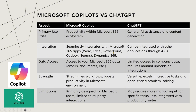Co-Pilot seamlessly integrates with Microsoft apps — Word, Excel, Outlook, Teams, and Dynamics 365. ChatGPT can be integrated with other applications but you need to write custom APIs or custom programs to integrate with this suite.